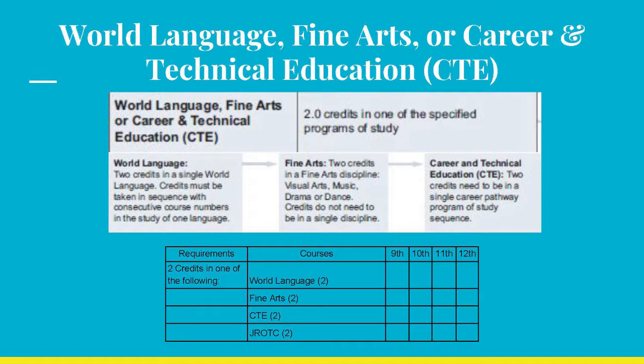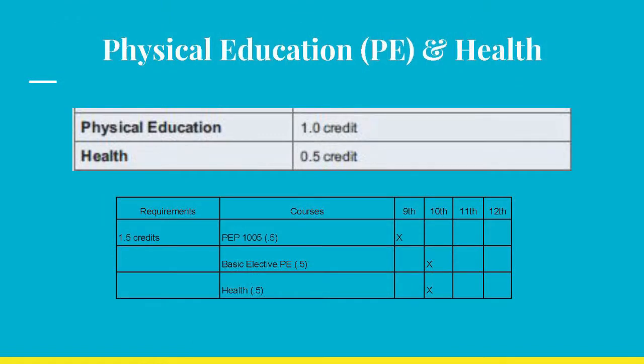JROTC is fulfilled with two years of JROTC. One credit in PE is obtained with a half credit in PEP 1005 or 9th grade PE and a half credit in a basic PE elective, like PEP 1010 or 10th grade PE, swimming, physical fitness, etc. Weight training and team sports count as electives — they do not meet the PE graduation requirement.